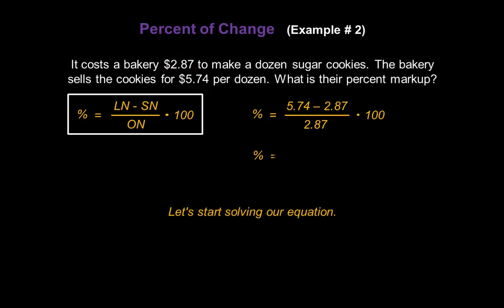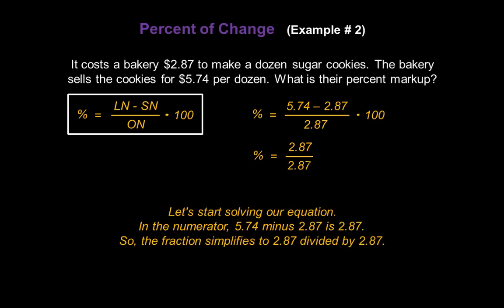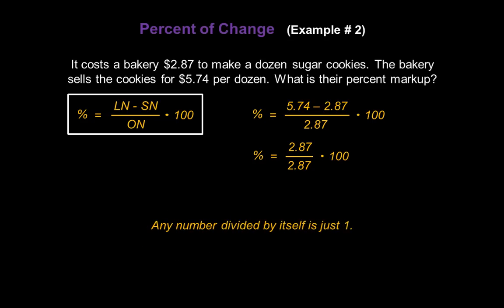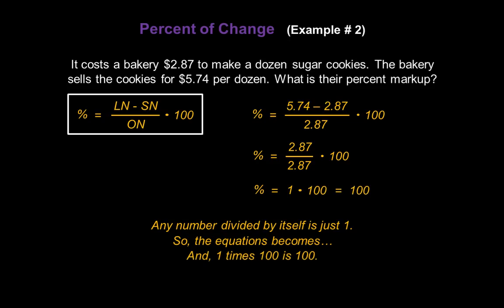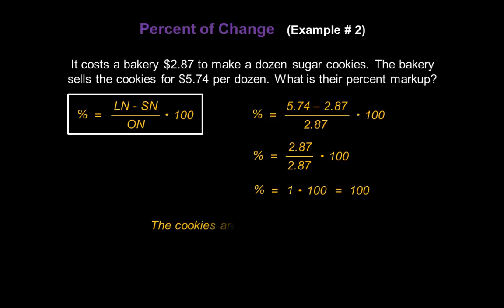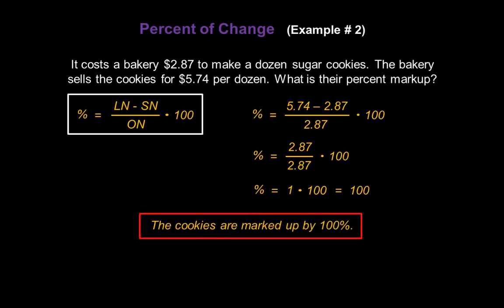Now let's solve. In the numerator, 5.74 minus 2.87 gives us 2.87. So the fraction simplifies to 2.87 divided by 2.87, times 100. Any number divided by itself is 1, so the equation becomes percent equals 1 times 100. That equals 100, so the cookies are marked up by 100%.